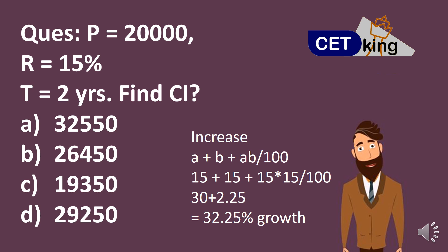So now I have given here in detail for you, but I don't need to use my pen here. Now 15% growth. First year 15, second year again 15. So 15 plus 15 plus 15 into 15 by 100. 30 plus 2.25, 32.25% growth.